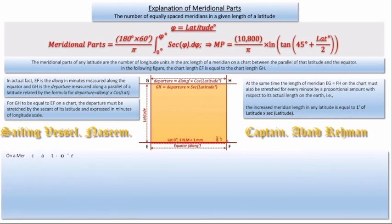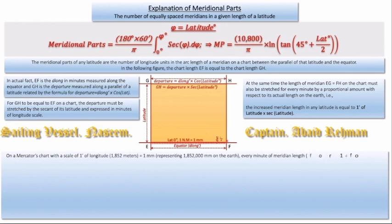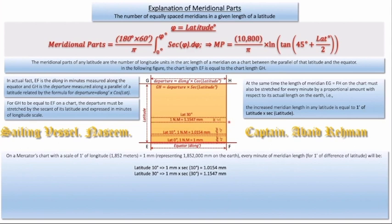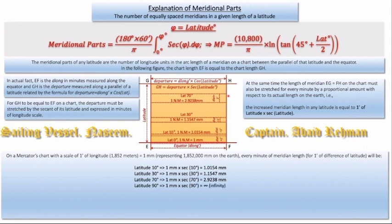This is zero on the equator since secant of 0° is zero. On a Mercator chart, if the scale of one minute of longitude on the equator — which is one nautical mile — is equal to 1 mm, the stretch for 1 mm at 10 degrees will be 1.0154 mm. At a latitude of 30 degrees, that 1 mm on the equator will become 1.1547 mm. At a latitude of 70 degrees, it will become almost three times, that is 2.9238 mm. And for 90 degrees latitude, which is the north pole or polar region, it will be undefined, since secant of 90° is undefined or infinity.